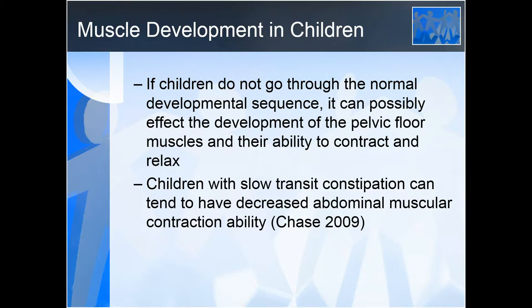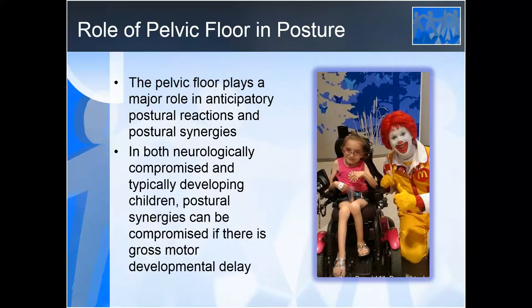Whether decreased contraction ability results from a neurologic deficit or poor stability, both can lead to issues with slow transit constipation. We need that muscular function and normal pelvic thoracic control in order to have full continence. The pelvic floor also plays a major role in anticipatory postural reactions and postural synergies, and in both neurologically compromised and typically developing children, postural synergies can be compromised if there's a gross motor developmental delay.